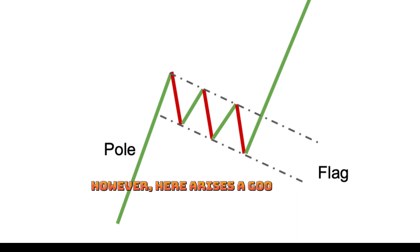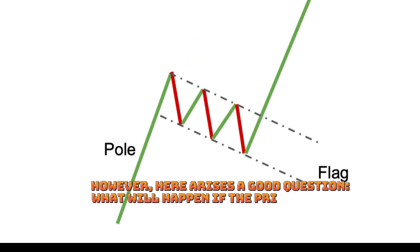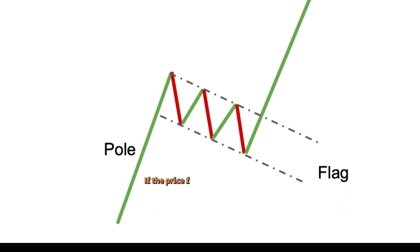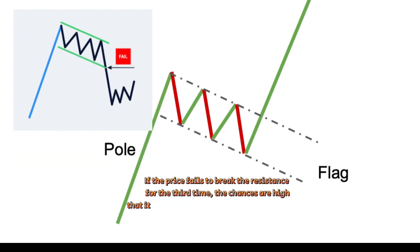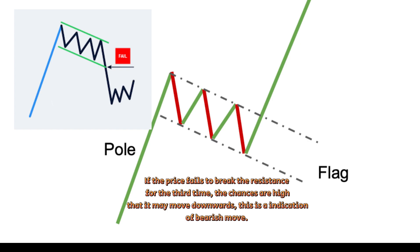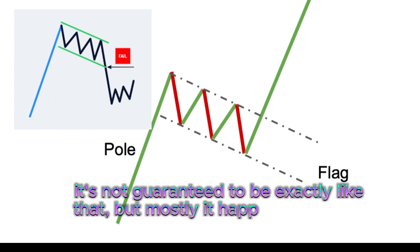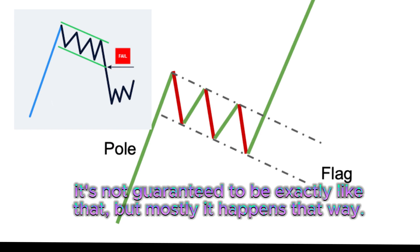Here arises a good question: what will happen if the price fails to break the resistance on the third time? If the price fails to break the resistance for the third time, the chances are high that it may move downwards — this is an indication of a bearish move. It's not guaranteed to be exactly like that, but mostly it happens that way.